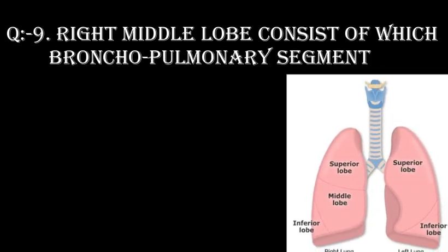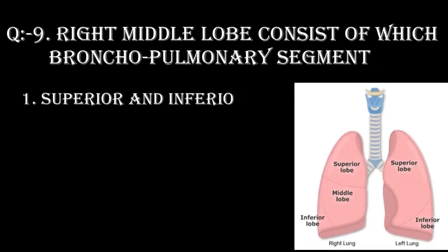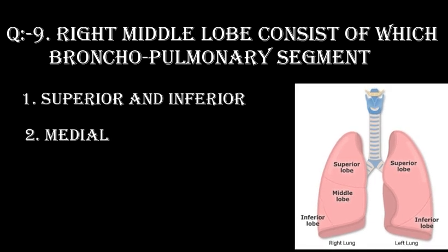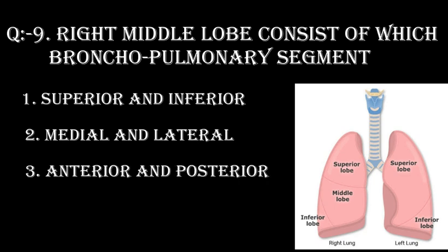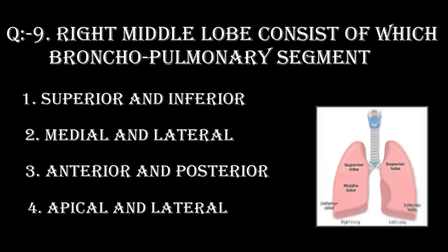Question number 9. The right middle lobe consists of which bronchopulmonary segments? Option 1: Superior and inferior. Option 2: Medial and lateral. Option 3: Anterior and posterior. Option 4: Apical and lateral.